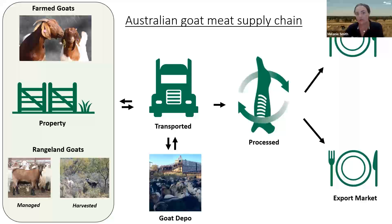It's really important that producers understand not only the supply chain, but how what they do on farm can dictate what flows through the whole chain and how important that is for processors and the end consumer. Without knowing what the end consumer wants, we won't have a market to sell goat meat into. Dr. Jared Lees will provide the science underpinning how we can influence goat eating quality to deliver a great consumer experience.